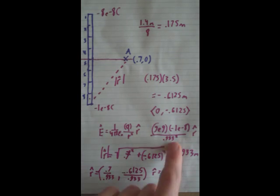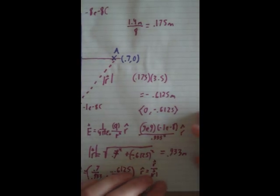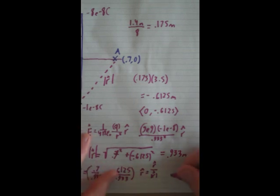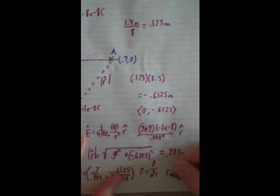So, now that we have r hat and all this, we just multiply it out, and that'll give us a number. We'll give us, our E will equal, sorry, I'm kind of running out of space,